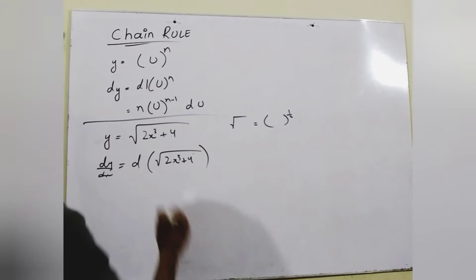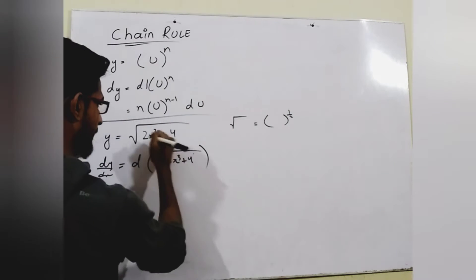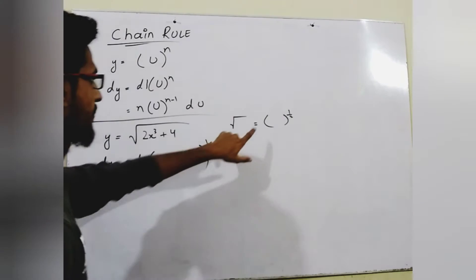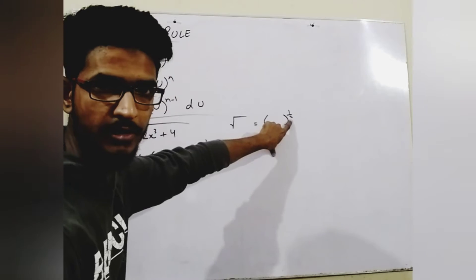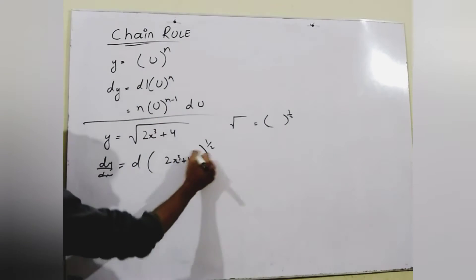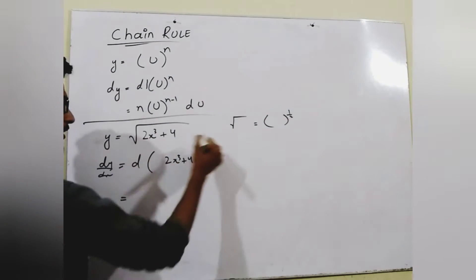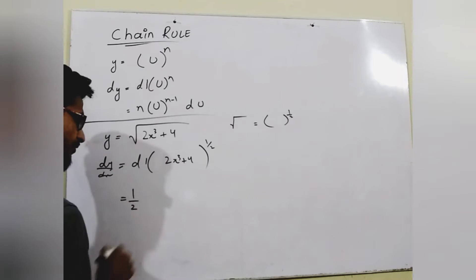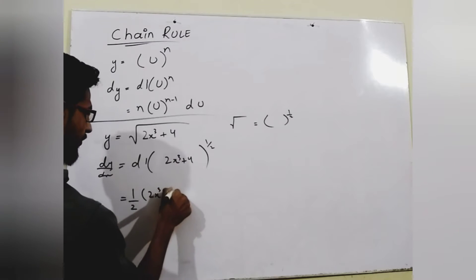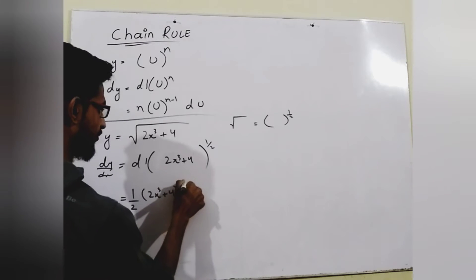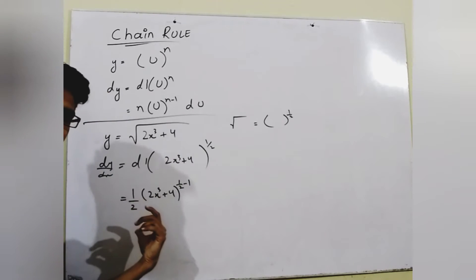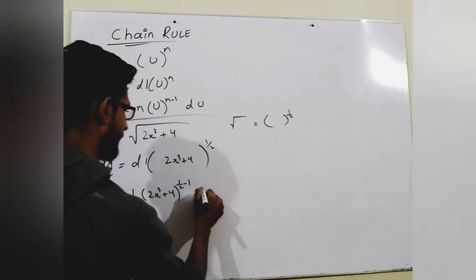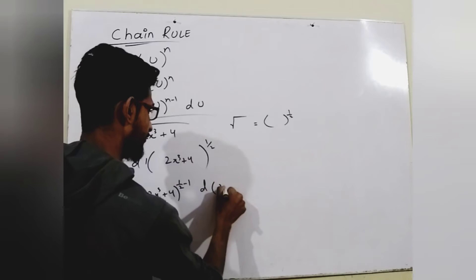We know that square root equals power 1/2. So in place of the square root, we can write the power 1/2. Then 1/2 is multiplied with the coefficient — giving 1/2 — and then (2x³ + 4) to the power (1/2 − 1), reducing the power by 1. Then we take the derivative again of the inner expression (2x³ + 4).